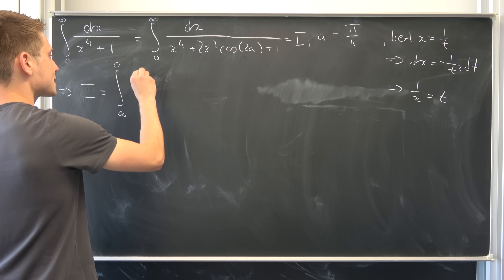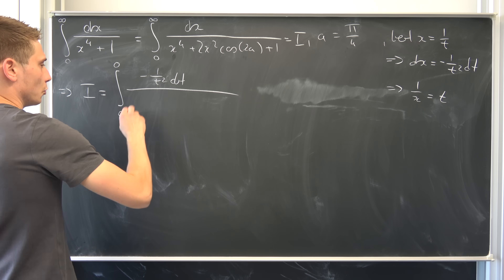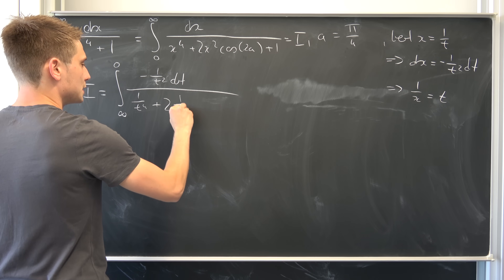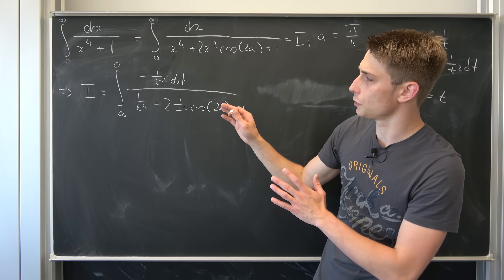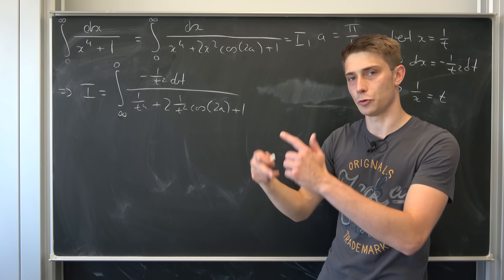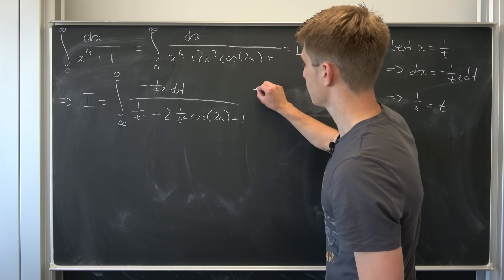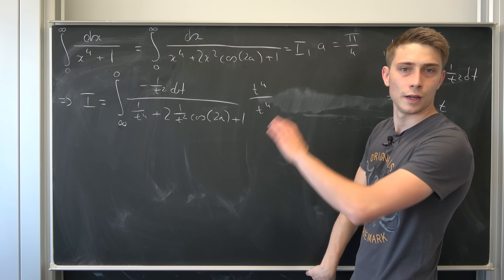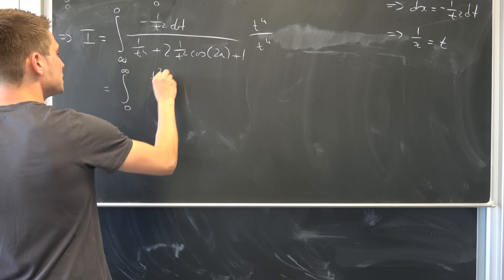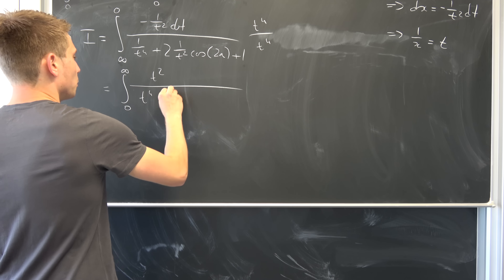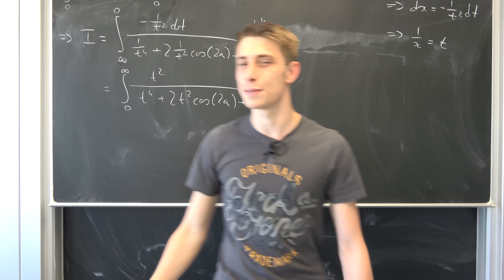Now we can plug all the other information in. We know that dx is minus 1 over t squared dt, and then over — plugging 1 over t into all the x's — 1 over t to the fourth power plus 2 times 1 over t squared cosine of 2a plus 1. We distribute the minus to change the boundaries from zero to infinity, and we advance the fraction by t to the fourth power over t to the fourth power. Now we have the integral going from zero to infinity of t squared over t to the fourth power plus 2t squared cosine of 2a plus 1 dt.